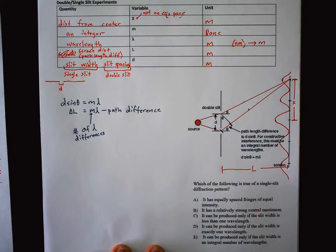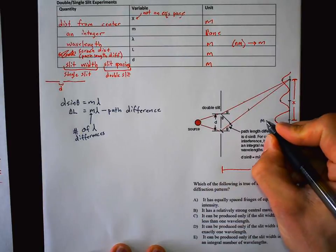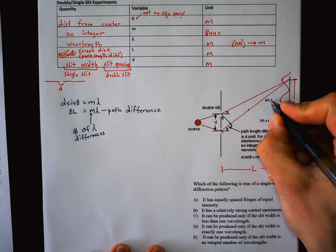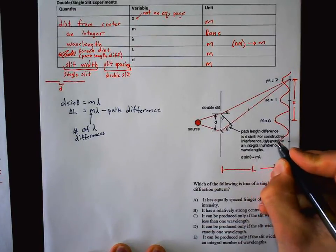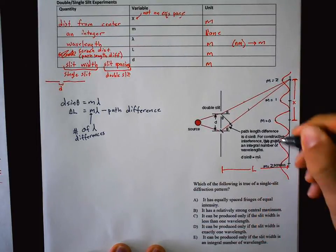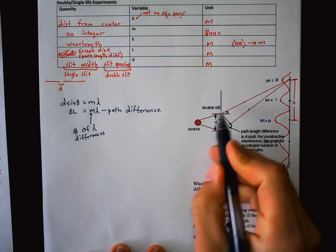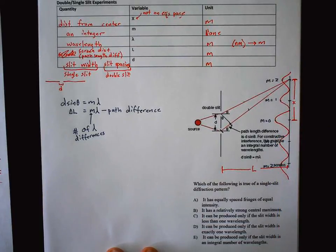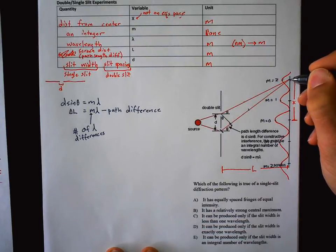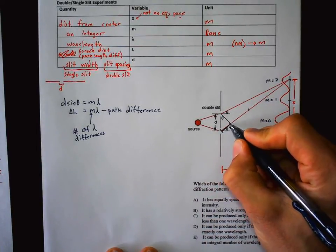Right at the center there is no path difference — m = 0. Moving outward: m = 1, m = 2, and so on. The same applies symmetrically on the other side — you could say negative 1, negative 2, but we typically don't. For m = 0, the path from both slits is the same. For m = 1, the paths are offset by one wavelength, giving constructive interference. For m = 2, offset by 2λ.